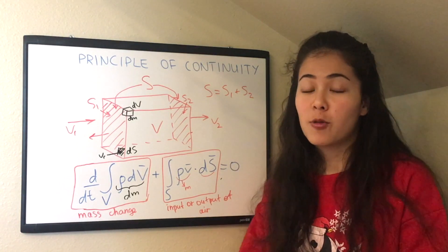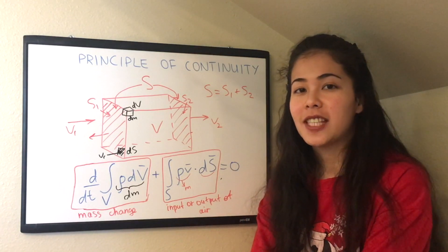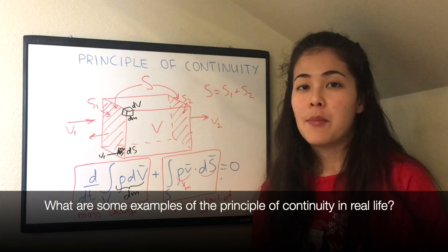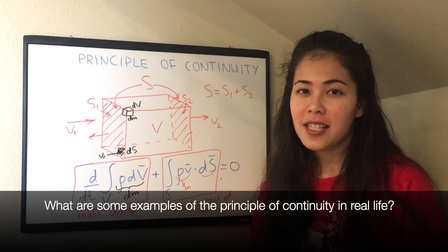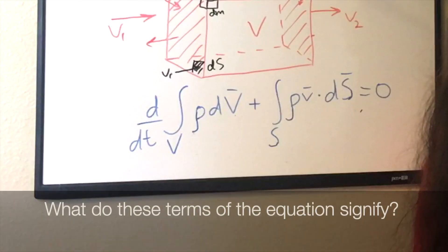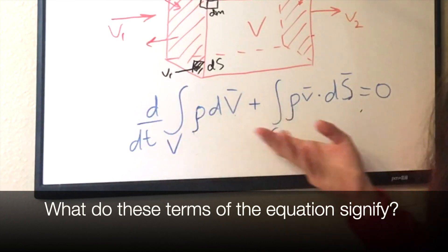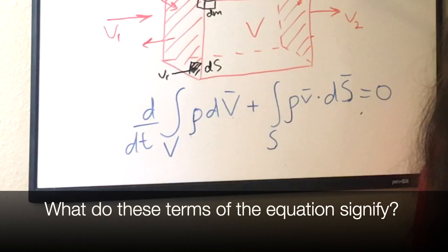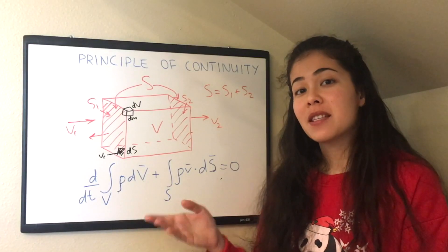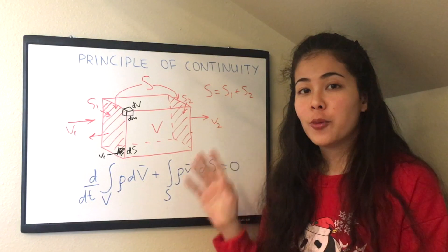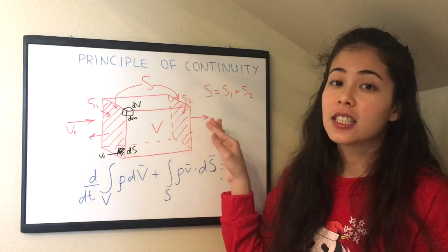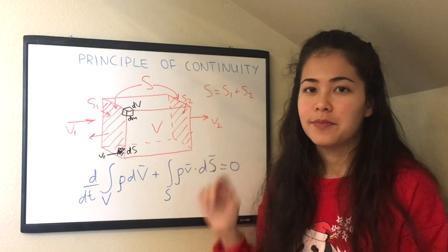Now let's do some questions to make sure you understand the principle of continuity. What are some examples of the principle of continuity in real life? Can you explain what these two terms of the equation mean physically? If the principle of continuity is clear for you, let's go to the next video where we will analyze this problem in more detail. Thank you.